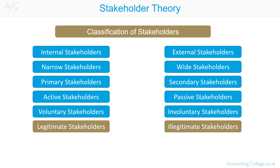Legitimate and illegitimate stakeholders is a very subjective classification. The extent to which the claim of a stakeholder is considered to be valid depends on your viewpoint. Legitimate stakeholders are those with an active economic relationship with an organisation. Illegitimate stakeholders are those viewed as not having a legitimate claim, meaning their views are not taken into account when making decisions.